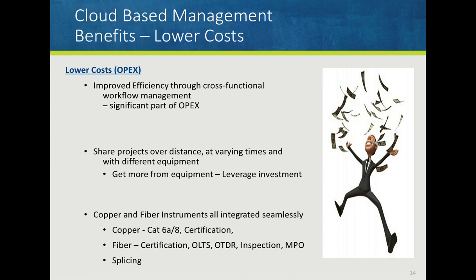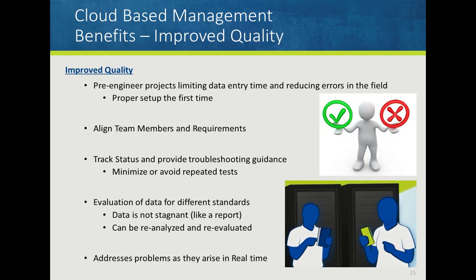Sharing projects over distance at varying times with different equipment — trying to leverage that investment is something all companies are vying for. And copper and fiber instruments can be integrated seamlessly, whether it's CAT 6, CAT 8 certification, OTDR, inspection, or even splicing. If you can integrate all of that within the cloud, that makes your organization much more efficient and puts the data at your fingertips.